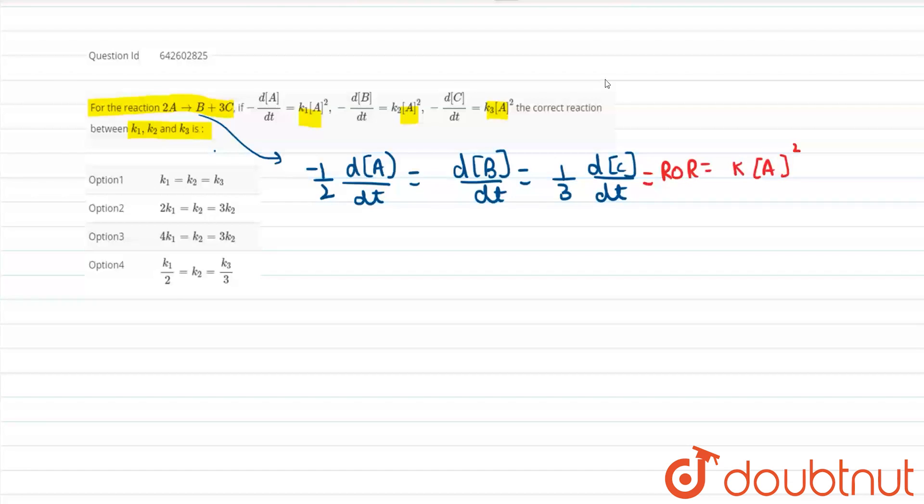So now friends, since it is all of these are equal, so individually also they will be equal. So friends, if I want to check out how much will be minus dA/dt, minus dA/dt will be equal to, it will be equals to friends 2k into A².